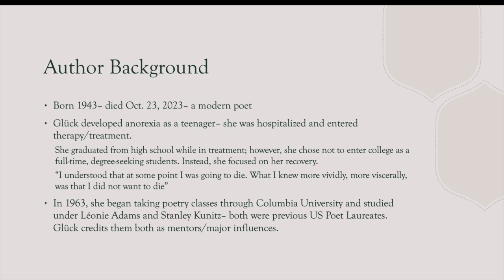Let's talk a little bit about Louise Gluck herself. She was born in 1943. She died very recently in October 2023, so she is actually the most modern author that we have studied this year. She had what we would think of as a much more quote-unquote normal or traditional upbringing. She developed anorexia as a teenager, which does have a bearing on her education and her work moving forward. She was hospitalized and entered therapy and treatment. She graduated from high school while in treatment, but after that, she chose not to enter college as a full-time degree-seeking student. Instead, she stayed in treatment and focused on her recovery. We have a quote that says, I understood that at some point I was going to die. What I knew more vividly, more viscerally, was that I did not want to die, and so that really encapsulates the decisions that she's making at that age in her life.